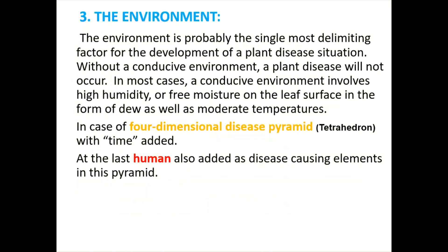The third element of the disease triangle is the environment. The environment is probably the single most limiting factor for the development of plant disease, because without a conducive or favorable environment, plant disease will not occur. In most cases, a favorable environment involves high humidity or free moisture on the surface of the leaf in the form of dew, as well as moderate temperatures.